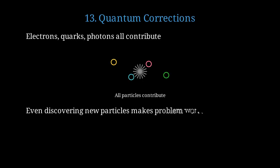Every time we discover a new particle, it makes the vacuum catastrophe worse. More particles mean more quantum corrections, driving the predicted value even higher.